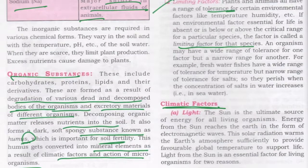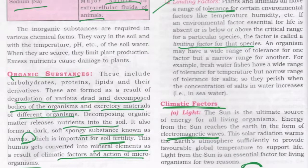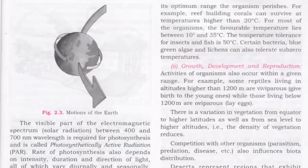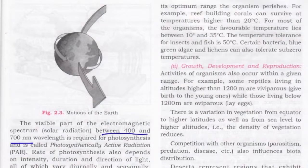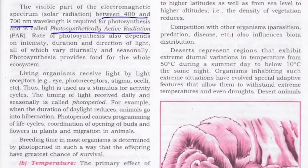Light — the sun is the ultimate source of energy for all living organisms. Energy from the sun reaches the earth in the form of electromagnetic waves, and this solar radiation warms the earth's atmosphere so that it provides a favourable global temperature to support life. The wavelength of the electromagnetic spectrum from solar radiation ranges between 400 and 700 nanometers, which is required for photosynthesis and is called photosynthetically active radiation. The rate of photosynthesis also depends on intensity, duration, and direction of light.